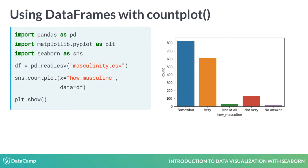After calling plot.show, we can see that we have a nice countplot of the values in the How Masculine column of our data. This plot shows us the most common response to the question 'How Masculine or Manly do you feel?' is 'somewhat', with 'very' being the second most common response. Note also that because we're using a named column in the DataFrame, Seaborn automatically adds the name of the column as the X-axis label at the bottom.